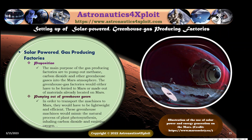The main purpose of the gas-producing factories to be set up on Mars is to pump out methane, carbon dioxide, and other greenhouse gases into the Mars atmosphere. The greenhouse gas factories will either have to be ferried to Mars or made out of materials already located on Mars. In order to transport the machines to Mars, they will have to be lightweight and efficient. These greenhouse machines will mimic the natural process of plant photosynthesis, inhaling carbon dioxide and emitting oxygen. Illustration of the use of solar power and energy generation on Mars is shown in this picture.